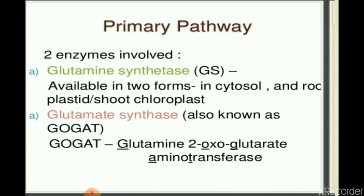Two enzymes are involved in the primary pathway. The first is glutamine synthetase. Ammonia is toxic to all living things. If the internal concentration within a plant cell rises above 1.0 mM, all photosynthetic reactions within the chloroplast are switched off. It is therefore essential that ammonia is assimilated rapidly and efficiently. This process is carried out by glutamine synthetase, which has a very high affinity for ammonia and can remove the compound from solution at levels as low as 1.0 µM.